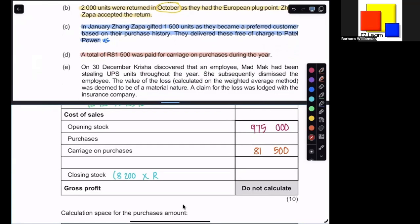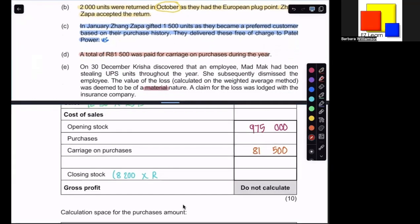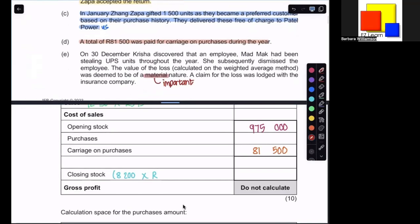On the 30th of December, Krisha discovered that an employee, Mad Mac, had been stealing UPS units throughout the year. She subsequently dismissed the employee. The value of the loss calculated on the weighted average method was deemed to be of a material nature. A claim for the loss was lodged with the insurance company. Remember that material nature means it is important. And it's going to make a difference to the decisions that would be made by stakeholders looking at the financial statements. So that's why we're going to need to do our calculations of the losses.